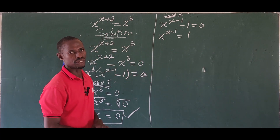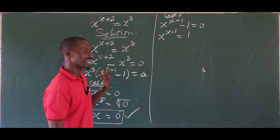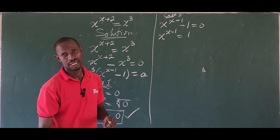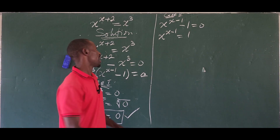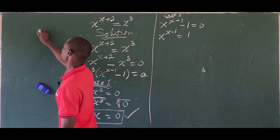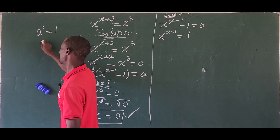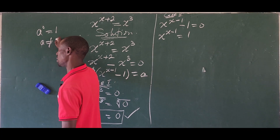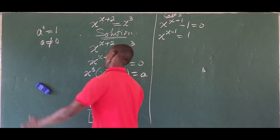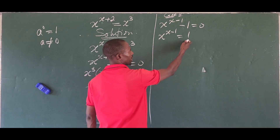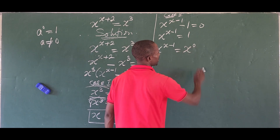We need to produce the same base x on the right hand side. Recalling the law of indices: a to the power of 0 equals 1, provided that a is not equal to 0. So we can rewrite 1 as x to the power of 0, giving us x to the power of x minus 1, equals x to the power of 0.